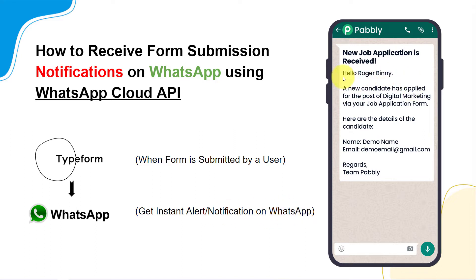Something like: 'Hello Roger Bini, a new candidate has applied for the post of digital marketing via your job application form.' Here are the details of the form, and you will find the name and the email of the person who has submitted the form on your WhatsApp — something like this.